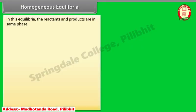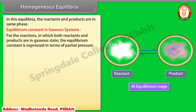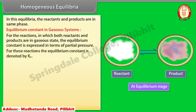Homogeneous Equilibria. In this type of equilibria, the reactants and products are in the same phase. Equilibrium constant in a gaseous system: for reactions in which both reactants and products are in the gaseous state, the equilibrium constant is expressed in terms of partial pressure and is denoted by Kp.